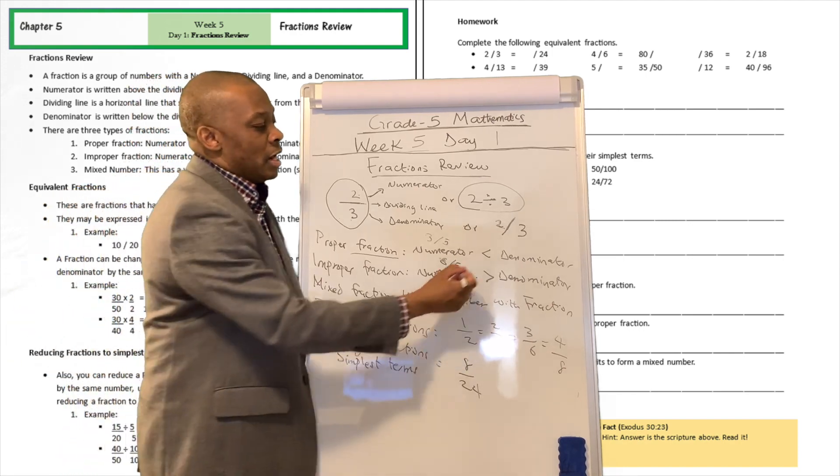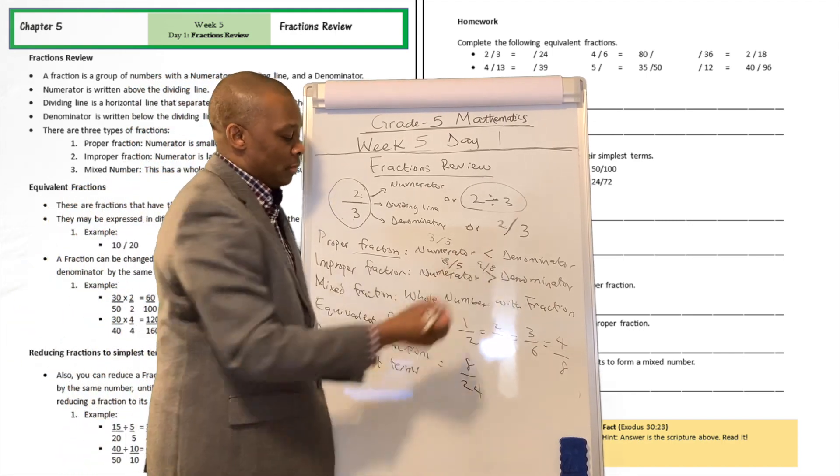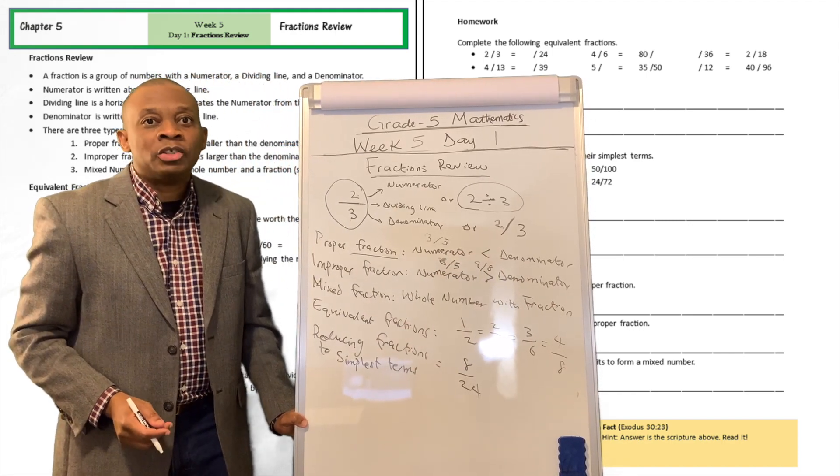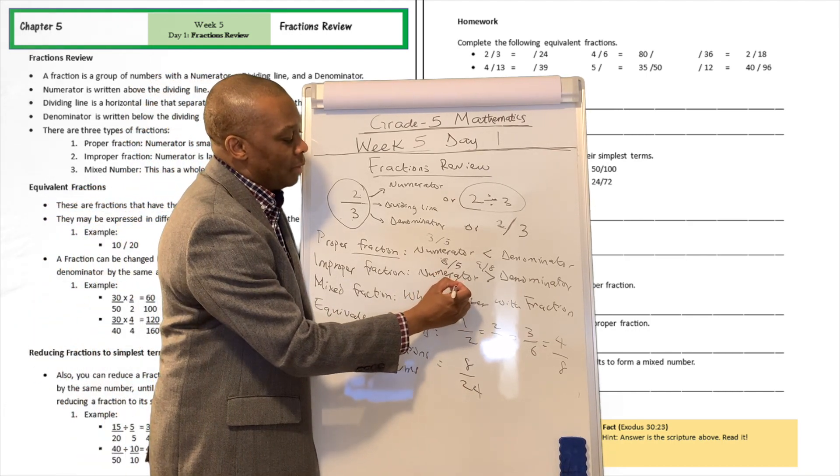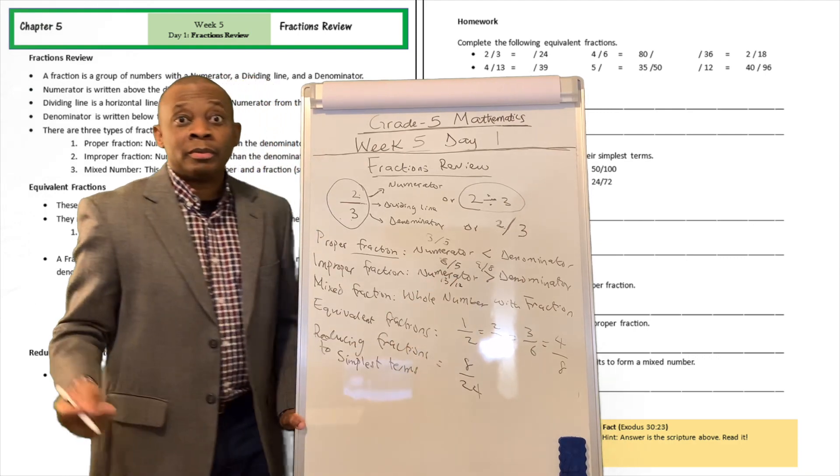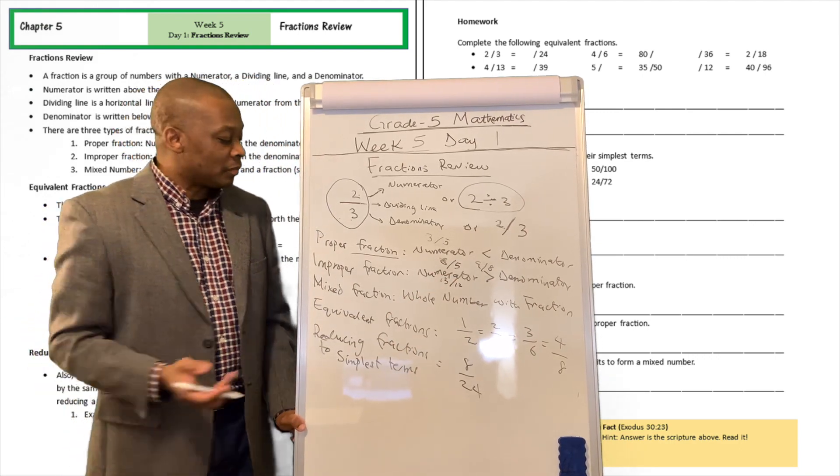Yeah, nine divided by eight. Well, that's correct. That's an improper fraction. Another example for me? Well, 13 divided by 12, for example. That's another improper fraction.